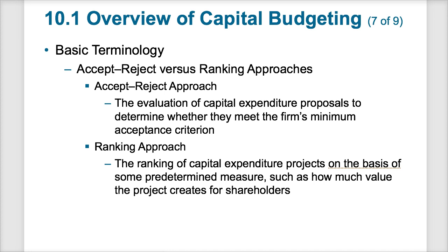Accept-reject versus the ranking approach: accept-reject is basically a yes-no decision. We take the capital expenditure proposal and ask, does it meet the minimum criteria? If our cost of capital is 10%, we would reject any project with a return less than 10% and accept any project with a return greater than 10%. In a ranking approach, we rank from best to worst all of the proposals, so we can accept proposals up to the point where we run out of capital — hopefully ranking the more valuable proposals at the top.